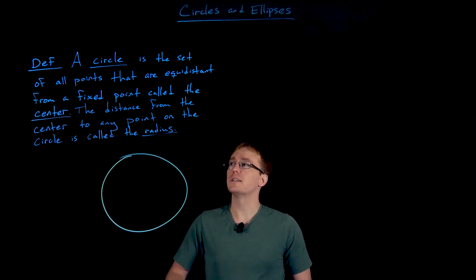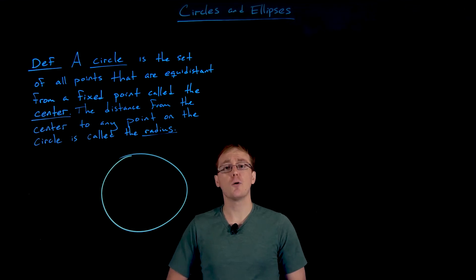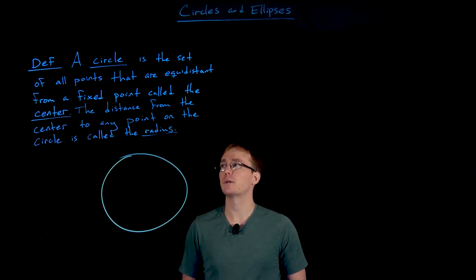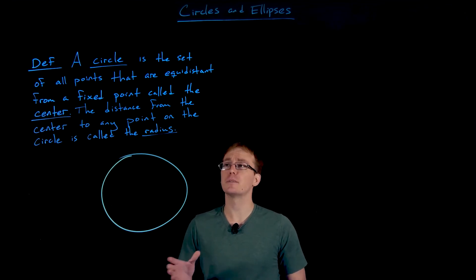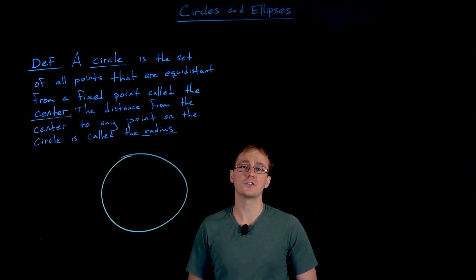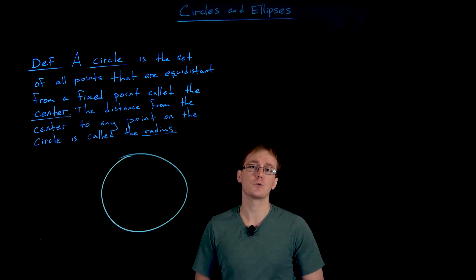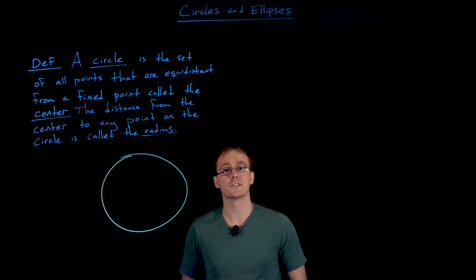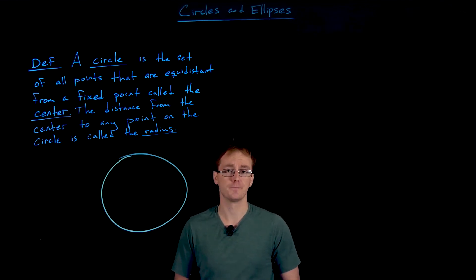A circle is just a set of all points that are equidistant, or of equal distance, from a fixed point that we call the center of the circle. This distance from the center to any point on the circle itself is what we refer to as the radius of the circle.